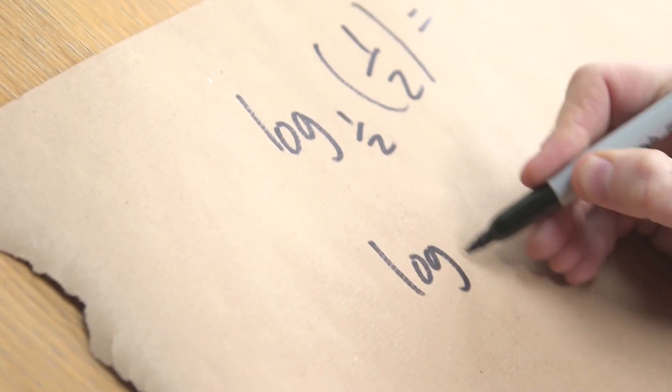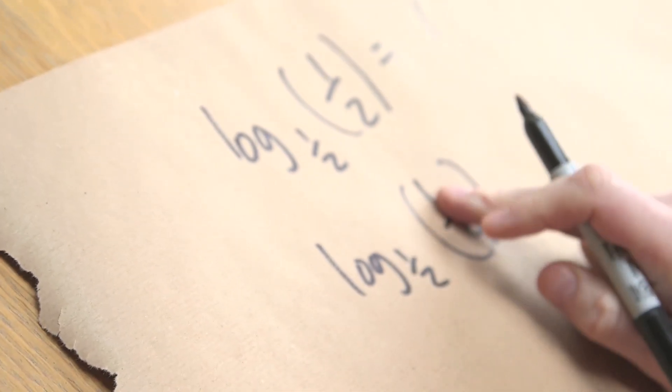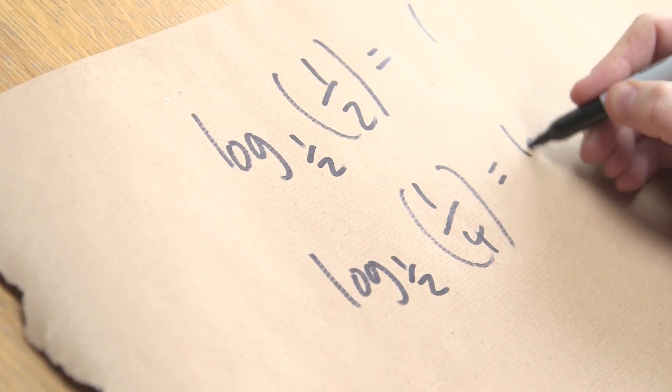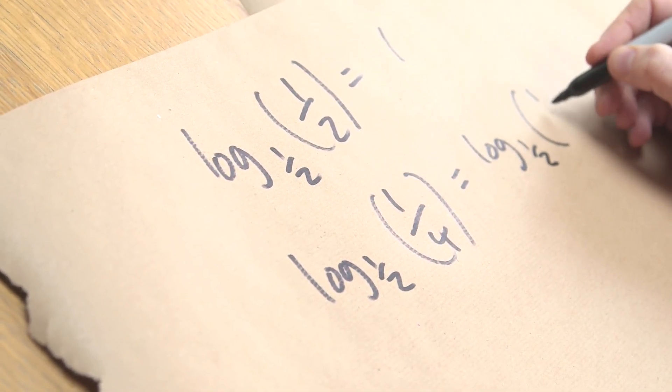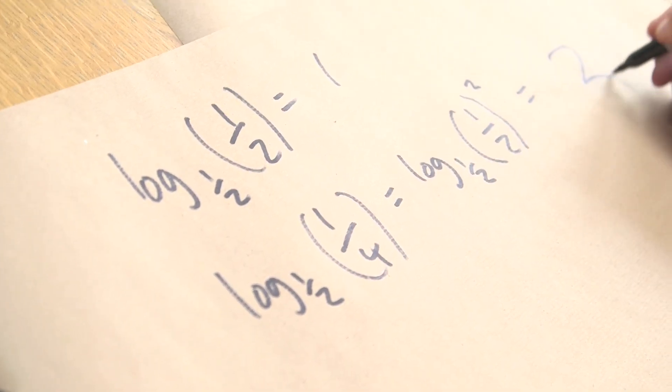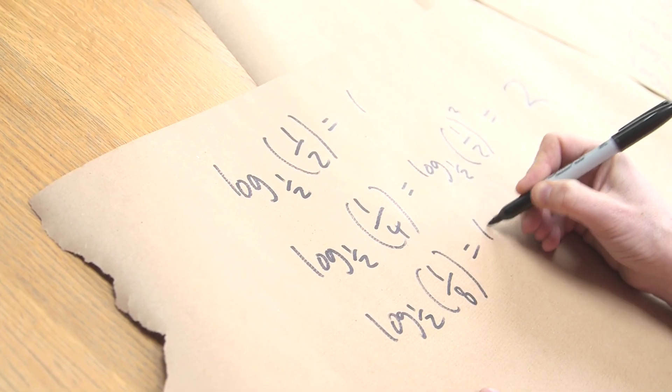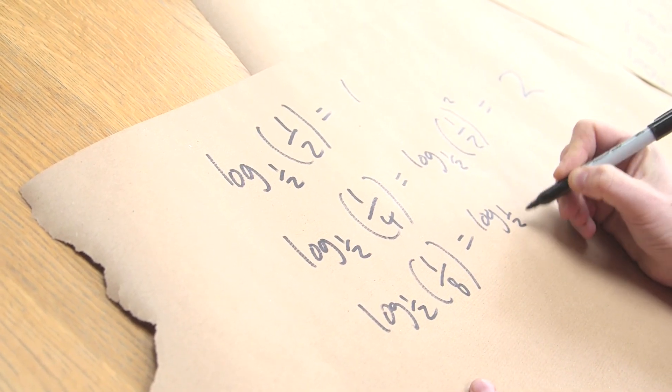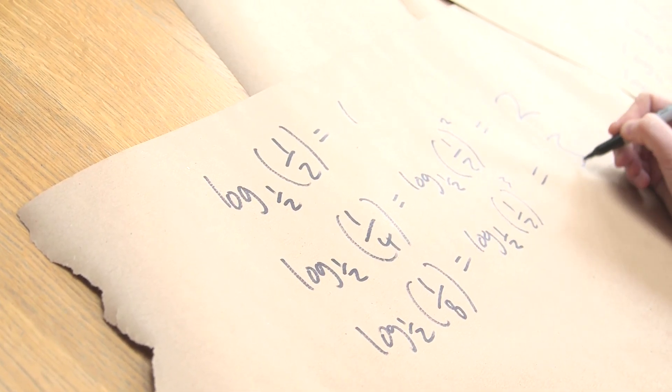Log base half of a quarter, we get 2 fours to do that, is the same thing as log base half of half squared, which equals 2. Log base half of an eighth is log base half of half cubed, which equals 3.